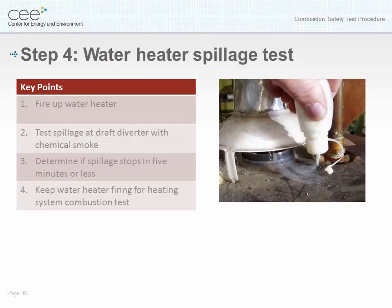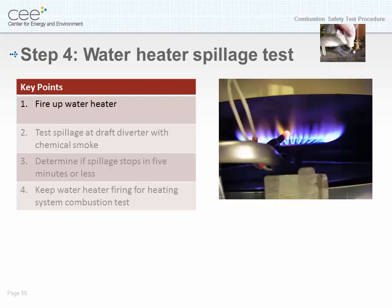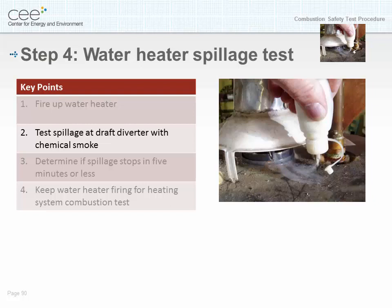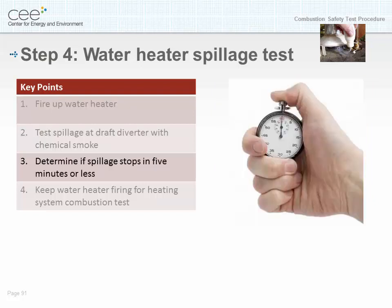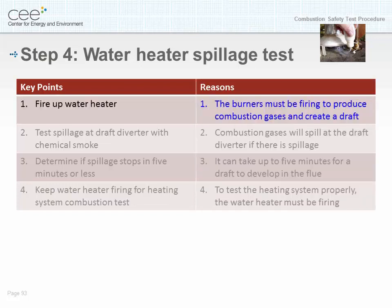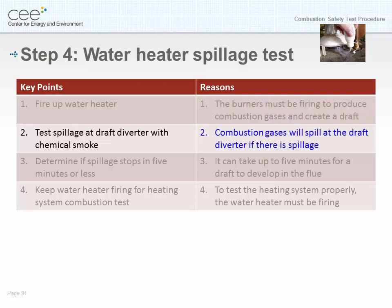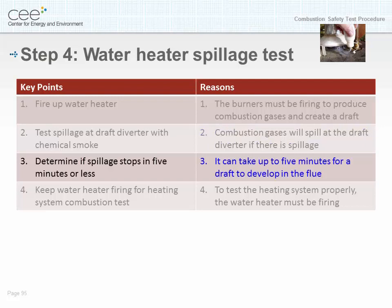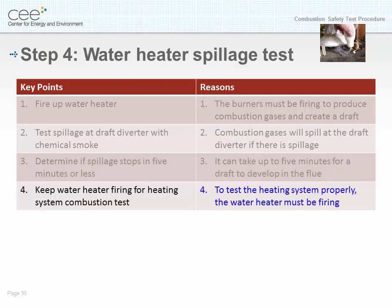Step four: water heater spillage test. Key points: number one, fire up the water heater; number two, test spillage at the draft diverter with chemical smoke; number three, determine if spillage stops in five minutes or less; number four, keep the water heater firing for the heating system combustion test. Reasoning: the burners must be firing to produce combustion gases and create a draft; combustion gases will spill at the draft diverter if there is spillage; it can take up to five minutes for a draft to develop in the flue; and to test the heating system properly, the water heater must be firing.